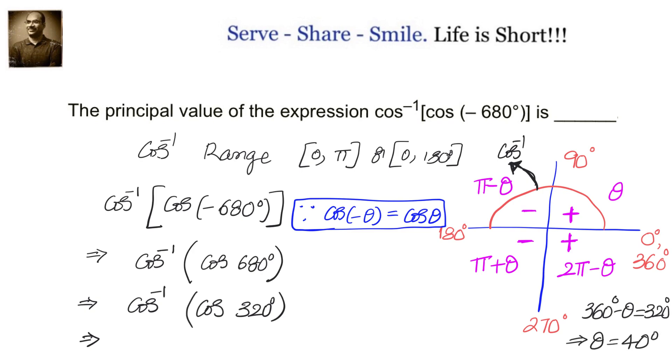Or we can also say that fourth quadrant angle 2 pi minus theta, 360 minus theta equals 320. From that we can calculate theta is 40 degrees. Therefore, principal value will be cos inverse of cos of 40 degrees.